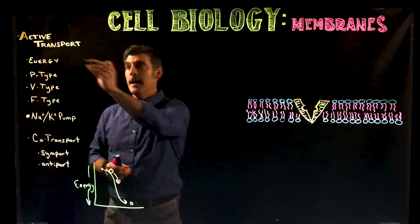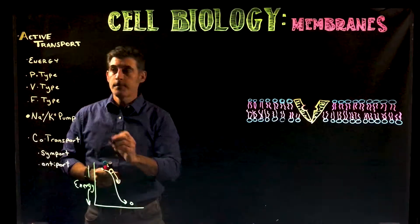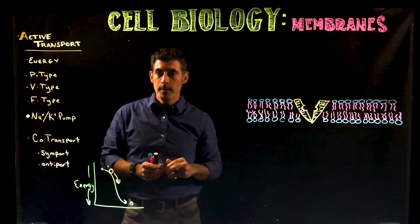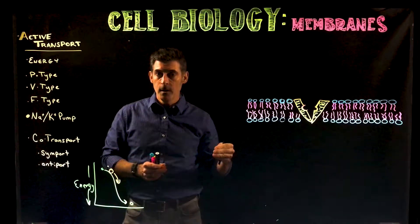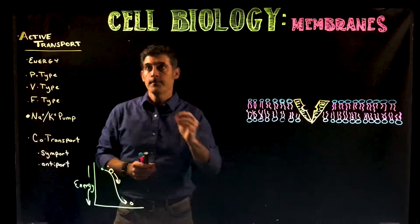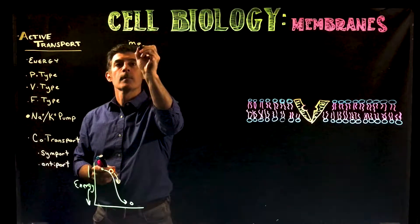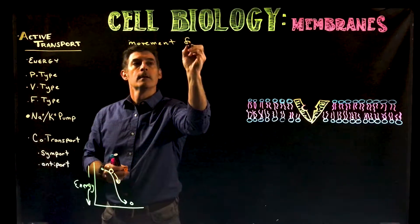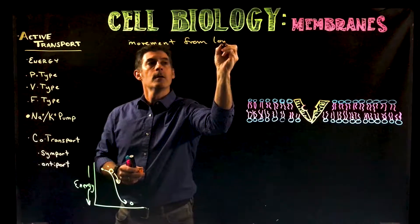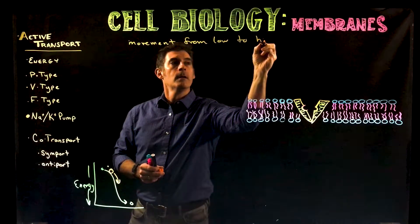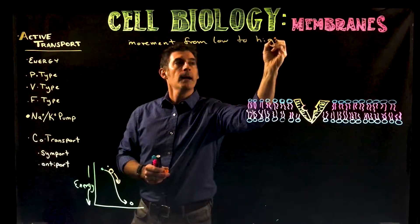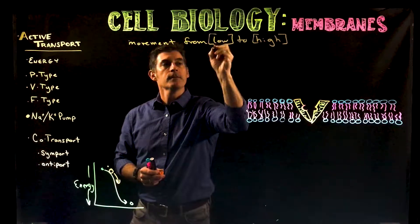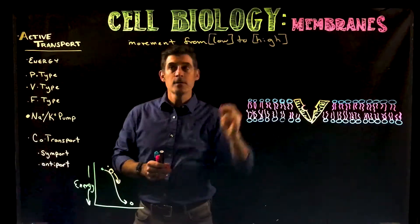Now what we're going to talk about is active transport. Active transport is movement across the membrane from areas of low to high concentration — so movement from low concentration to high concentration.